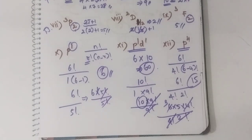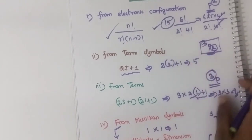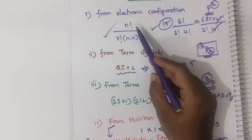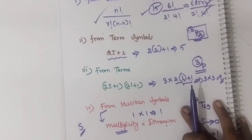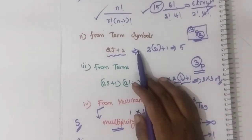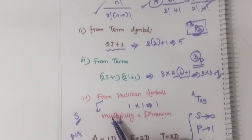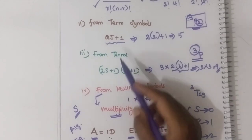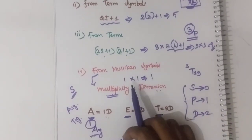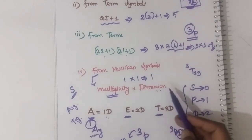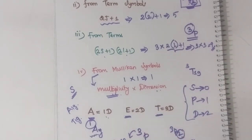Whenever you have questions from microstates, it is a very easy topic - don't leave that question. To summarize: if they give you electronic configuration, the formula is N factorial divided by R factorial N minus R factorial. If they give you a term symbol, then 2J plus 1. If they give you a term, then (2S+1) into (2L+1). And for Mulliken symbol, it is multiplicity into dimension.